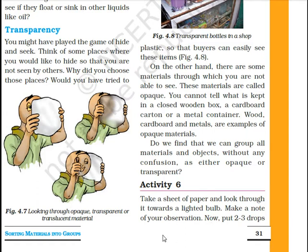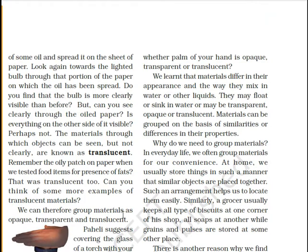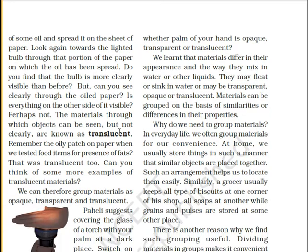Look through the paper towards the light and note your observation. Now put two or three drops of oil and spread it on the sheet of paper. Look again towards the lighted bulb, at the portion of the paper where the oil has been spread. Do you find that the bulb is more clearly visible than before? Yes, because when we spread oil, the paper becomes more translucent.